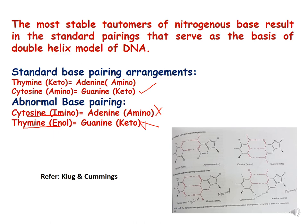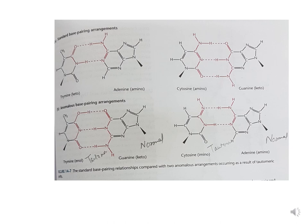The enol tautomeric form of thymine means it will not bond with adenine but will bond with guanine. The imino tautomeric state of cytosine means it will not bond with guanine but will instead bond with adenine, even though adenine is present in its normal state — the imino state of cytosine drives the anomalous pairing with adenine.